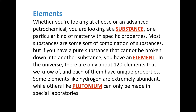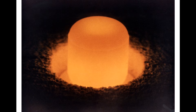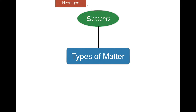Others, like plutonium, can only be made in special laboratories — in fact, they're man-made. Plutonium is highly radioactive — here's a picture of it right here — and we use it in nuclear power plants and also in nuclear weapons. So let's add an example to our graphic organizer. An example of an element would be hydrogen. Hydrogen is in water, hydrogen is in the sun. So our first type of matter we're talking about is elements.